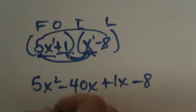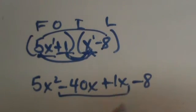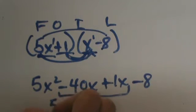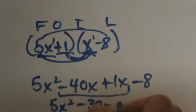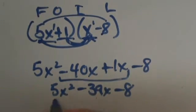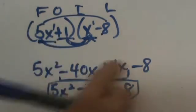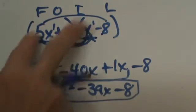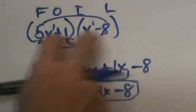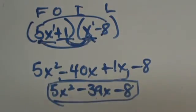We end up with 4 terms, but the two middle terms combine: negative 40x plus 1x is negative 39x. So bringing that down, we have 5x squared minus 39x minus 8. That is how you find the product of two binomials — we use the acronym FOIL: First, Outer, Inner, Last.